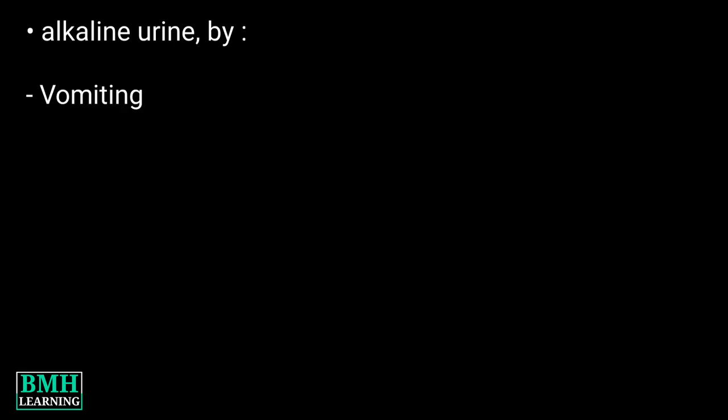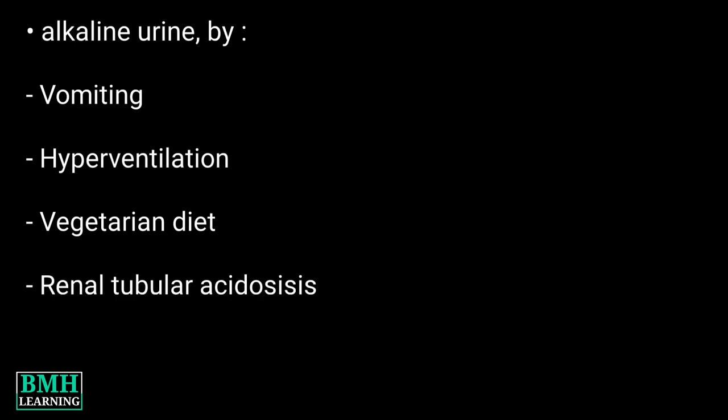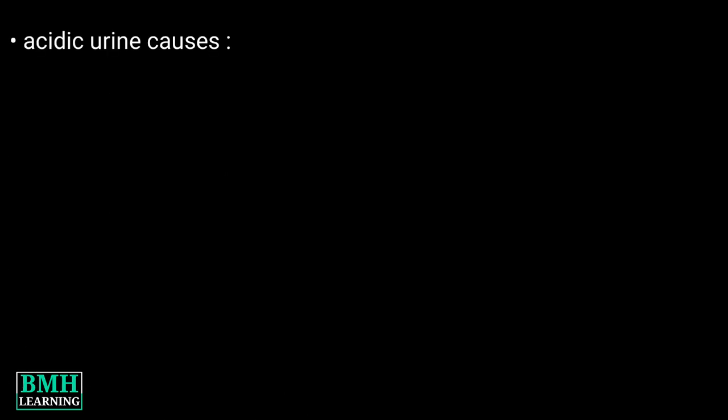caused by vomiting, hyperventilation, vegetarian diet, renal tubular acidosis, and urease-producing bacteria. Causes of acidic urine include diabetes mellitus, starvation,